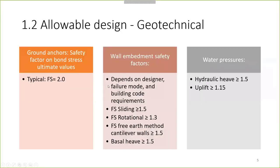On the geotechnical side of allowable design, we use a typical safety factor on presumptive bond values of 2.0. For wall embedment, we look for safety factors of 1.5 in sliding, 1.3 rotational for embedded walls, and above 1.5 for cantilever. For basal heave, we look for something above 1.5. Hydraulic heave and uplift also have to be checked.